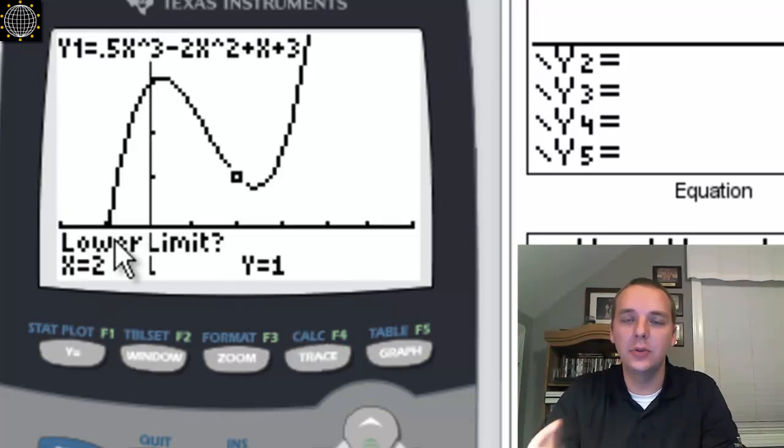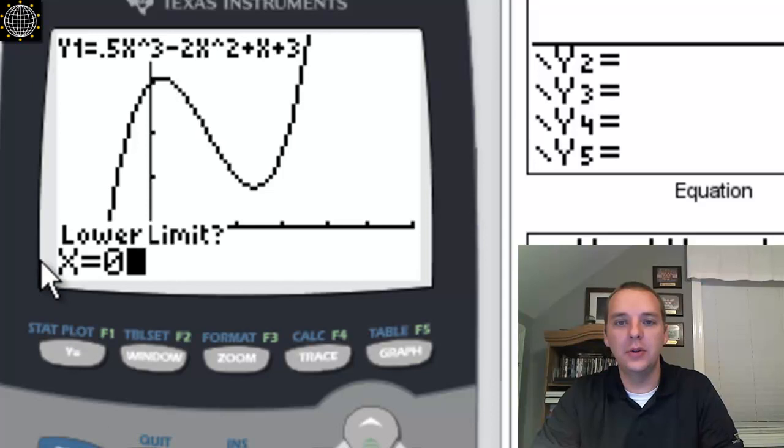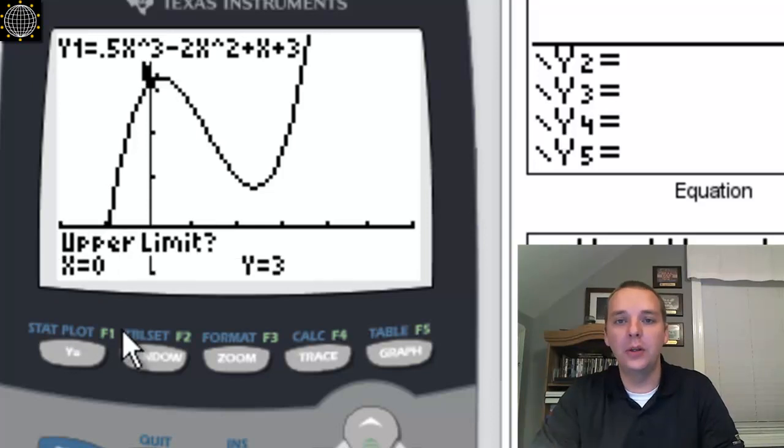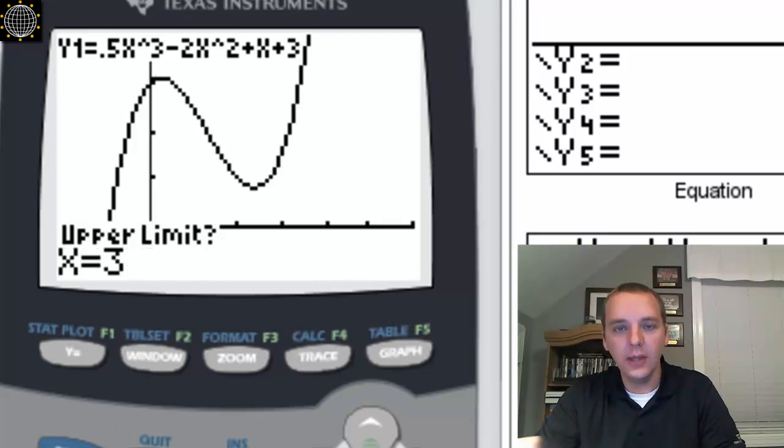The first: what's your lower limit of integration? Where do you want to start the integration? We want to start it at 0, so we'll push 0 and push enter. So x equals 0. And then it'll say what do you want the upper limit of integration to be, and we'll type 3 as our problem said, and we'll push enter.